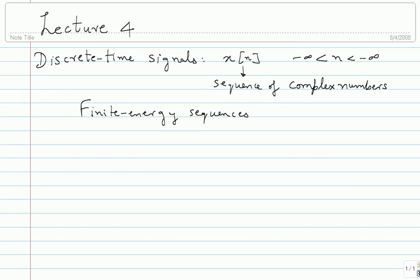What does finite energy sequence mean? In the discrete time case, summation over all n of modulus of x of n squared should be finite. That gives me finite energy sequences. I will only be worried about these kind of sequences. I think you must be familiar with quite a few of these things, so we will go through once again a little bit fast.